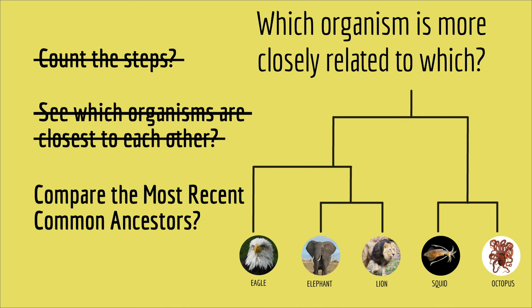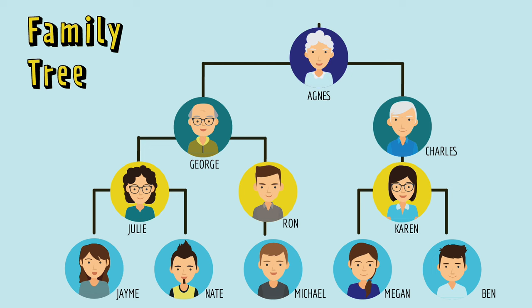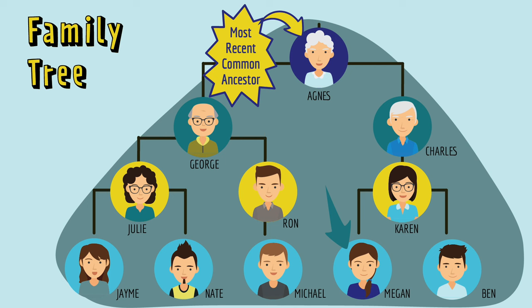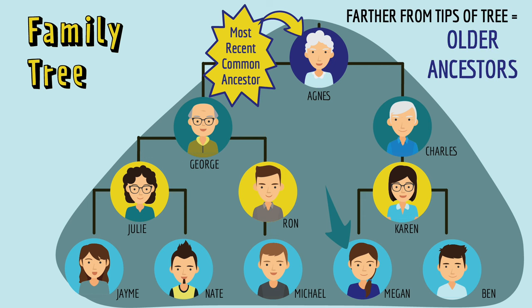Another option is to compare the most recent common ancestors. You know that I'm more closely related to my cousin, Michael, than I am to my second cousin, Megan. That's because my cousin and I share the same grandfather. He's our most recent common ancestor. But he is not an ancestor of our second cousin, Megan. The most recent common ancestor between me and my second cousin, Megan, is our great-grandmother, Agnes. She's a generation older than my grandfather, which is why she's farther away from the tips of the tree.